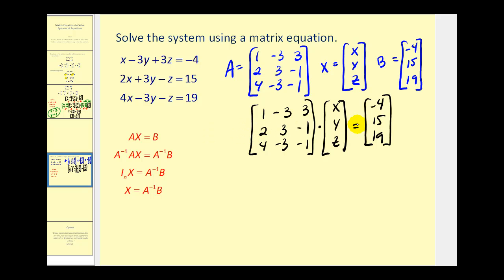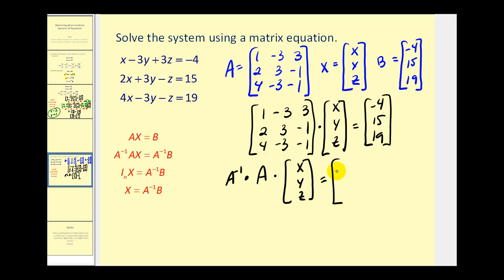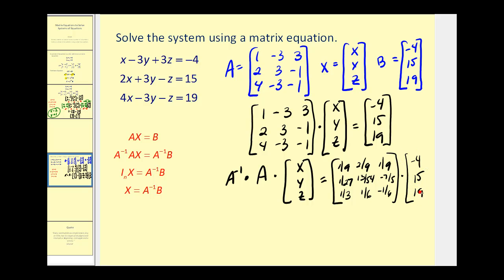Now we are going to multiply both sides of the equation by the inverse of matrix A. I'm going to write A inverse times matrix A times X, Y, Z must equal the inverse matrix multiplied by the constant matrix. On the left side we know that A inverse times A equals the identity matrix, and the identity matrix times the variable matrix will just equal the variable matrix. So we'll have X, Y, Z must equal the product of these two matrices.